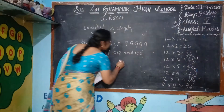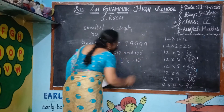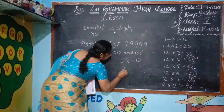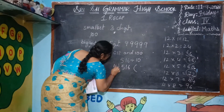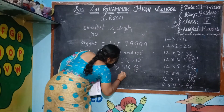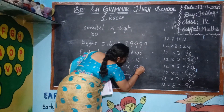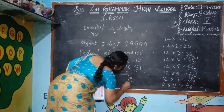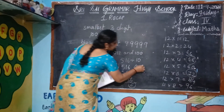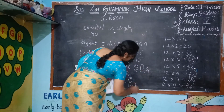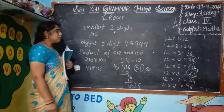Find the quotient and remainder when 516 is divided by 10. Do 516 divided by 10. 10 fives are 50 — 16 is left. 10 ones are 10 — 6 is the remainder. And the quotient is 51, remainder is 6.